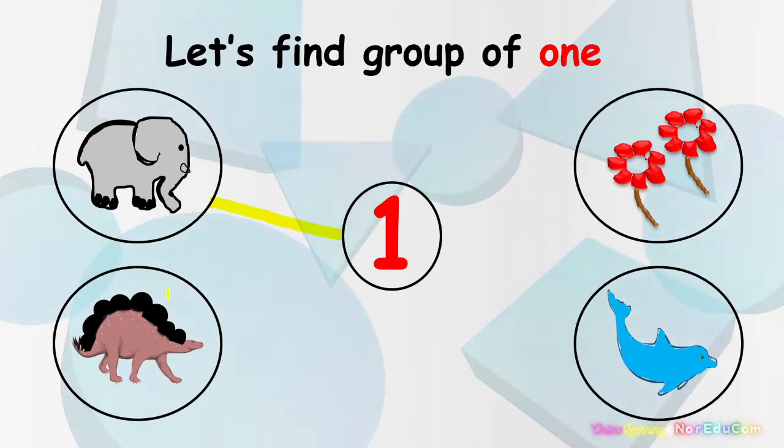Can you name this animal? Yes, it's a dinosaur. How many dinosaurs do we have here? Let's count. 1. 1 dinosaur. Is it group of 1? Yes, that's right. So let's match to number 1.